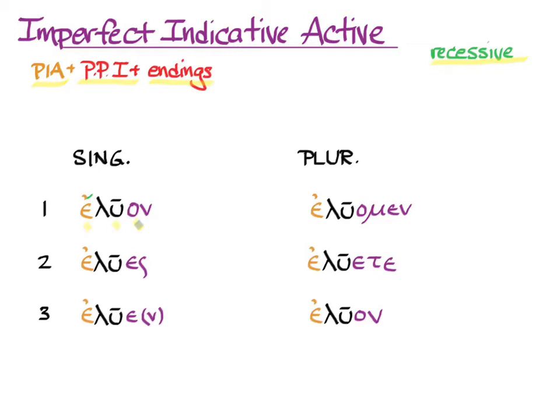Second person singular, s is short, so we go one, two, three, and add the acute. Second person plural, short, one, two, three, and add the acute.